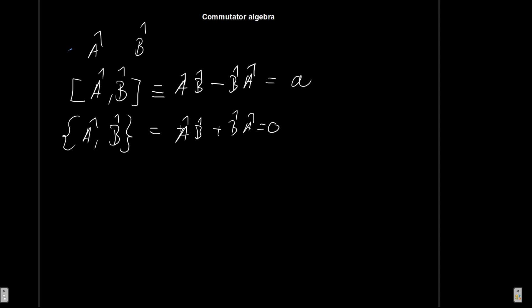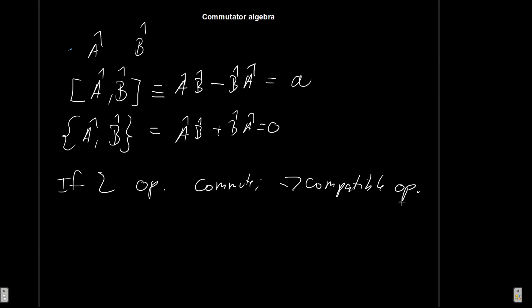It is very important to know why operators commute, because there is a very deep physical meaning. If two operators commute, we call them compatible operators. This means we can determine both observables simultaneously. In the next video we will see that the uncertainty principle can actually be rewritten in terms of the commutator between two operators, and unless the commutator is zero there will be an uncertainty principle for any non-compatible observables.